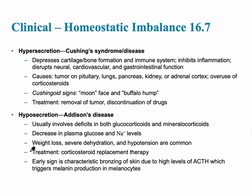When there are too many glucocorticoids, that causes Cushing's syndrome or Cushing's disease, in which there are fatty deposits. The opposite — hyposecretion, where there are too few glucocorticoids — is called Addison's disease, and it involves a deficit in glucocorticoids as well as mineralocorticoids, leading to weight loss, severe dehydration, and low blood pressure.